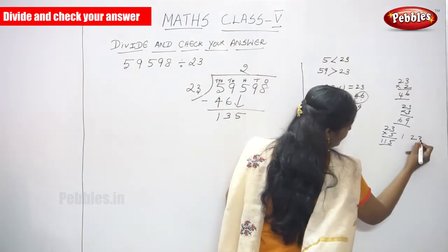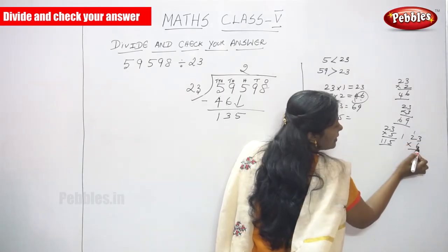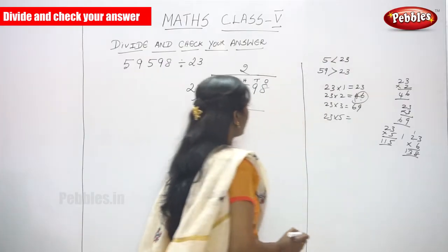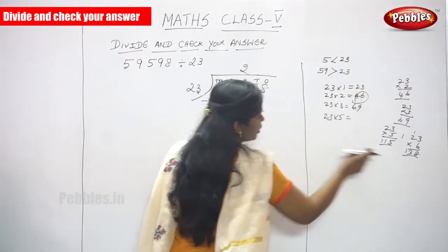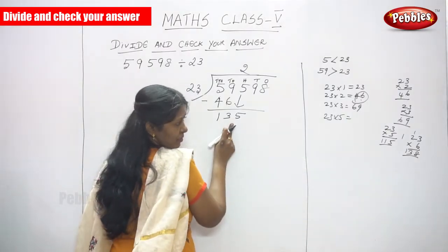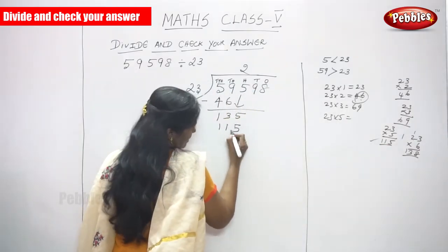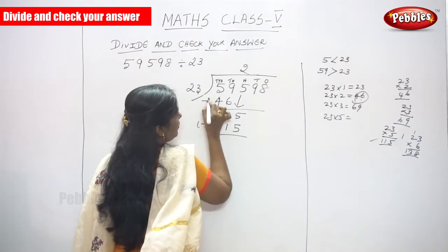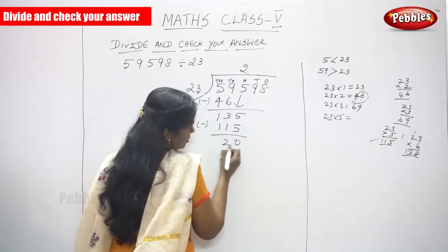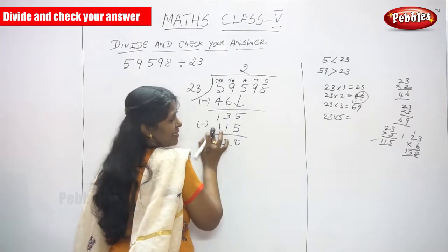23 multiplied by 6: 6 threes are 18 carry 1, 6 twos are 12, 12 plus 1 is 13 — so 138. But you can't write 138, because 138 is greater than 135. So you have to choose 115. Subtract: 5 minus 5 is 0, 3 minus 1 is 2, 1 minus 1 is 0 — no need to write that.